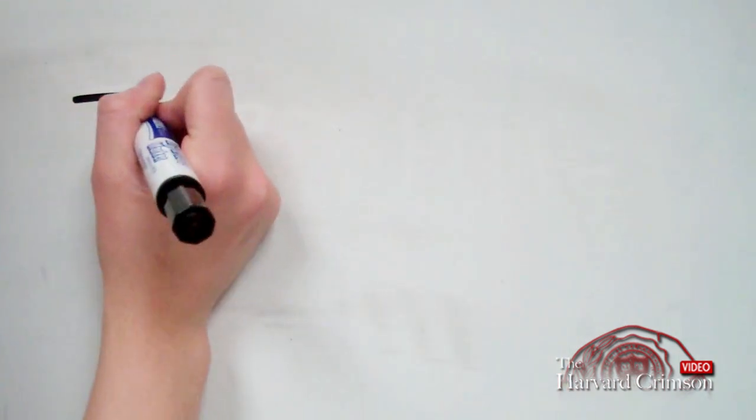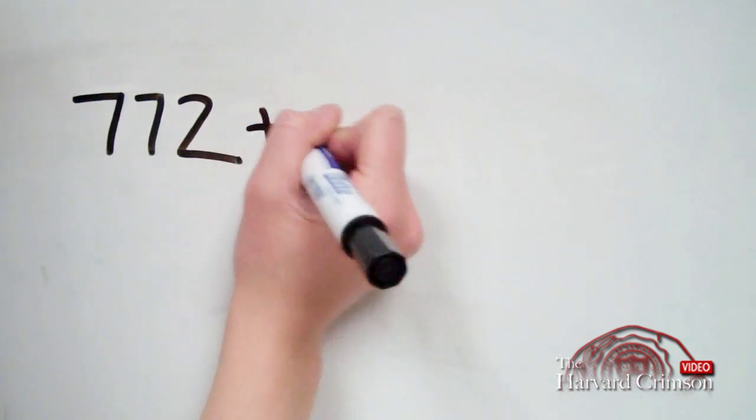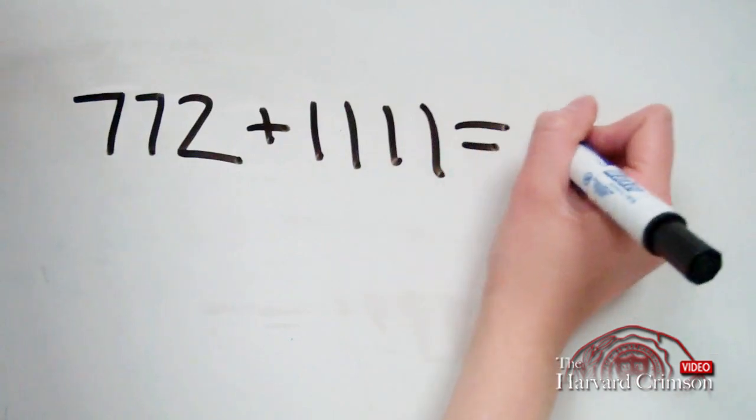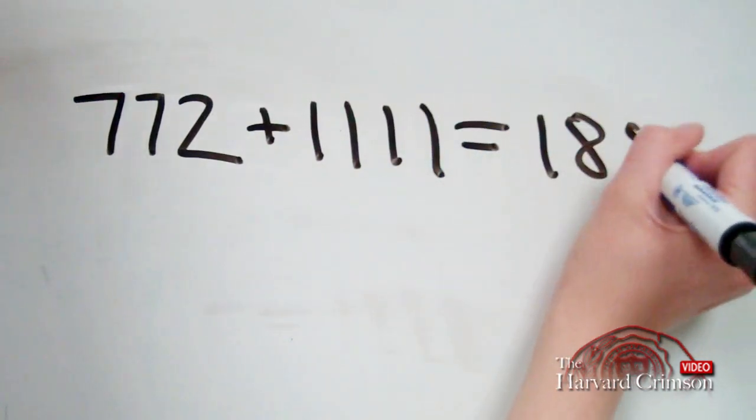If we add the number of students accepted under the Early Action program to the estimated number of students admitted under the regular decision, we get about 1,900 total acceptances.